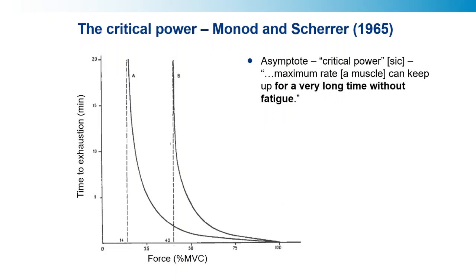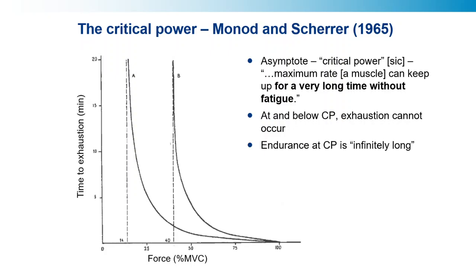But what does 'a very long time' mean, and what does 'without fatigue' mean? That's what I'd like to try and address today. They also asserted that at and below the critical power, exhaustion cannot occur. We automatically think that doesn't really sound right, because you can be exhausted at quite low exercise intensity for all kinds of reasons. But if you look at the literature, there are related statements: endurance at critical power is infinitely long, and the time to exhaustion is indefinite at the critical power.